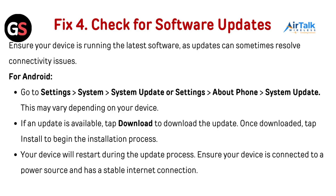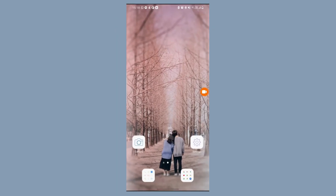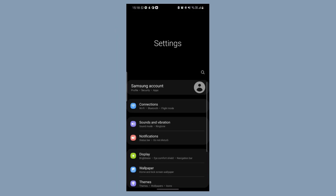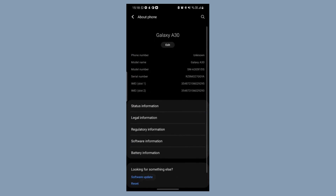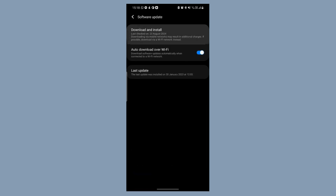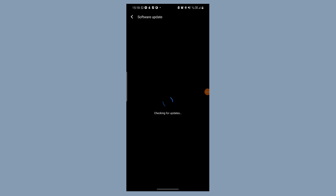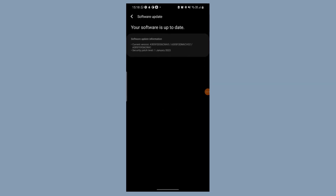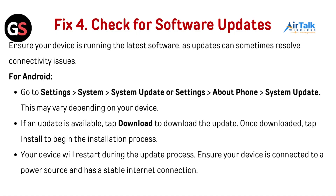Fix 4: Check for software updates. Ensure your device is running the latest software, as updates can sometimes resolve connectivity issues. For Android, go to Settings, then System, then System Update — or Settings, then About Phone, then System Updates. This may vary depending on your device. If an update is available, tap Download, then tap Install to begin the installation process. Your device will restart during the update process. Ensure your device is connected to a power source and has a stable internet connection.